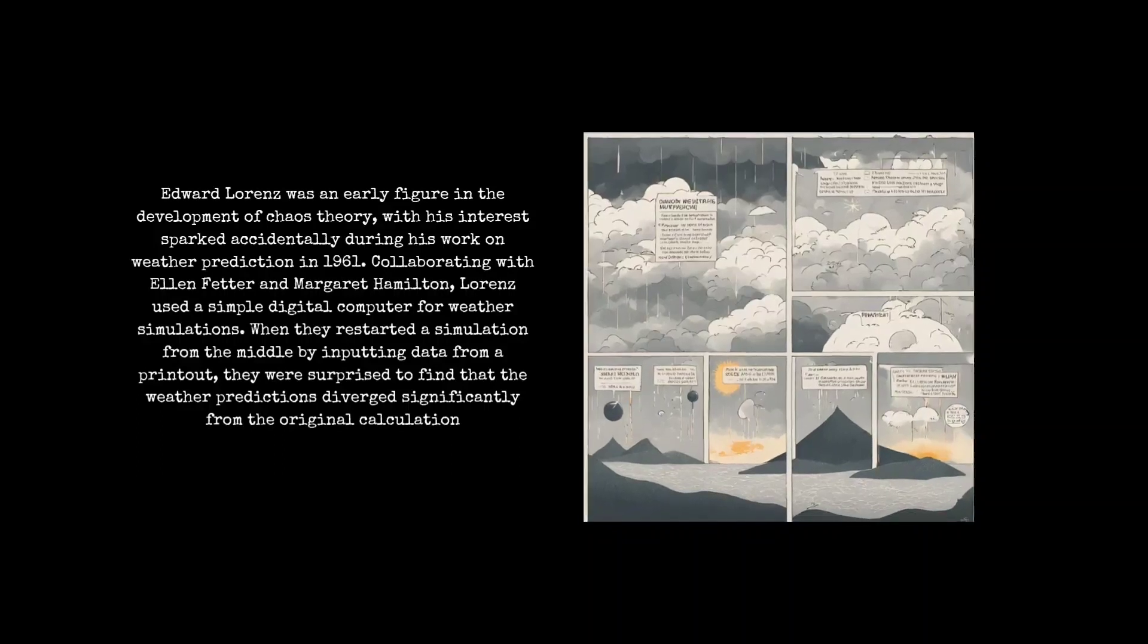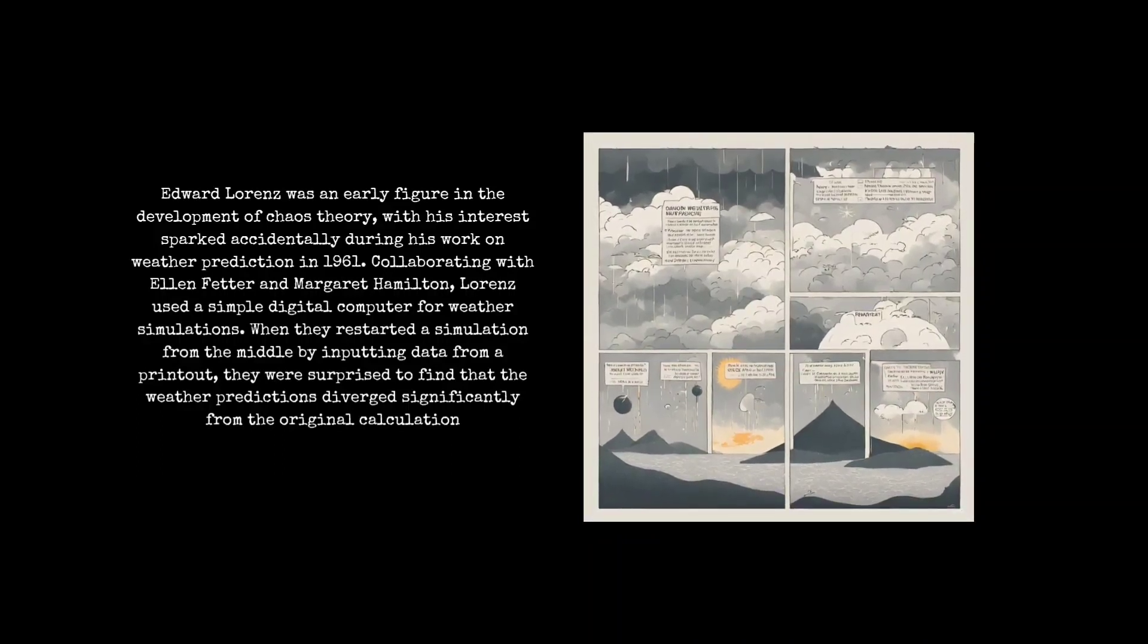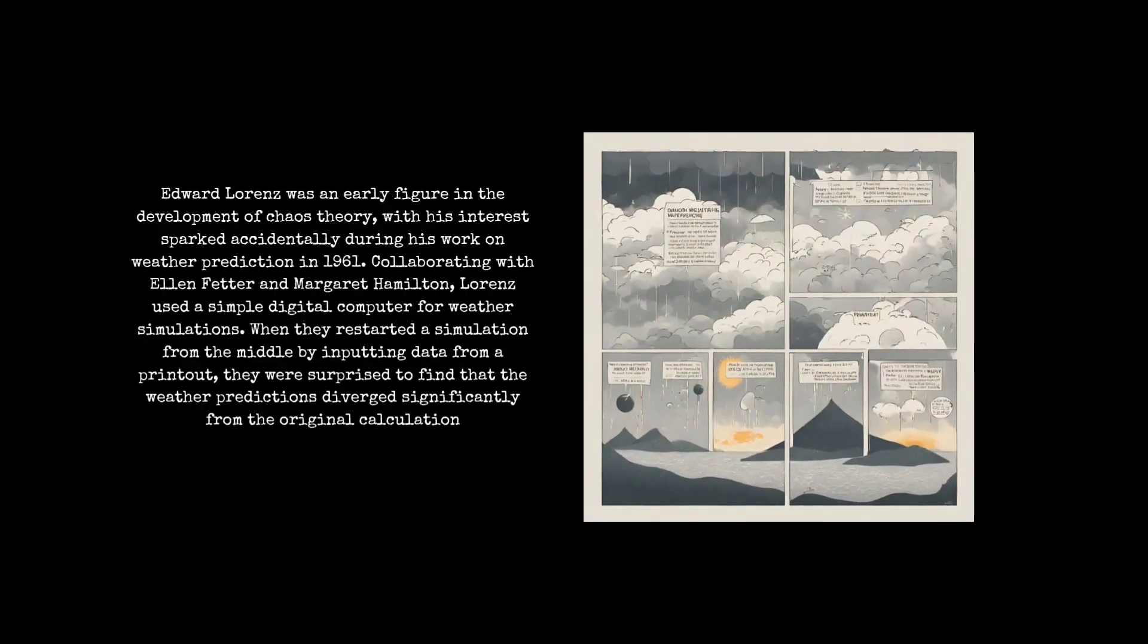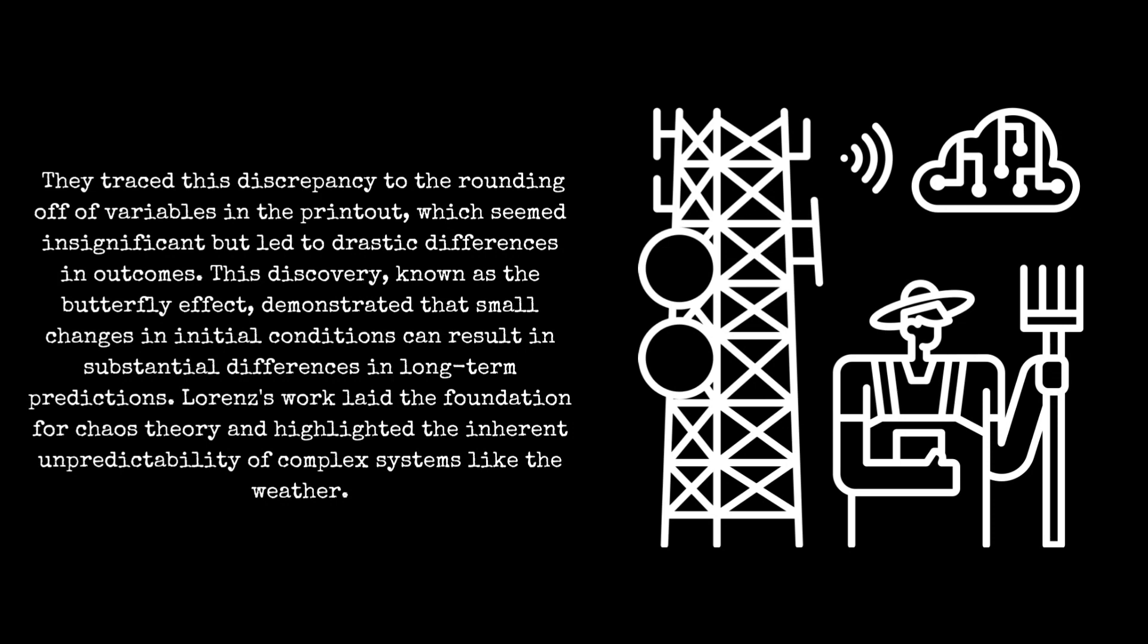Edward Lorenz was an early figure in the development of chaos theory, with his interest sparked accidentally during his work on weather prediction in 1961. Collaborating with Ellen Fetter and Margaret Hamilton, Lorenz used a simple digital computer for weather simulations. When they restarted a simulation from the middle by inputting data from a printout, they were surprised to find that the weather predictions diverged significantly from the original calculation.